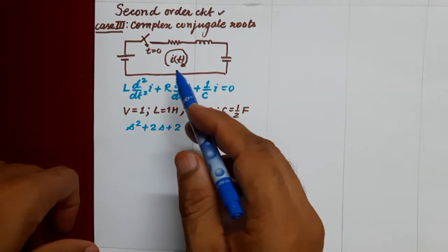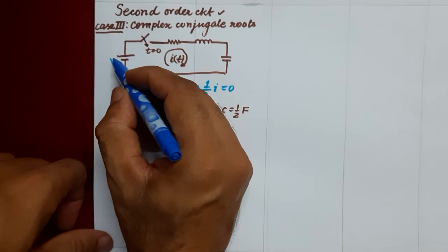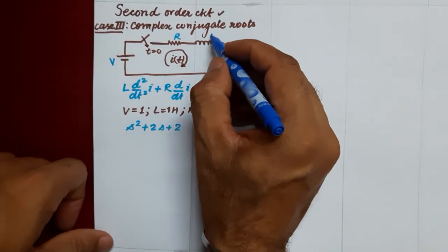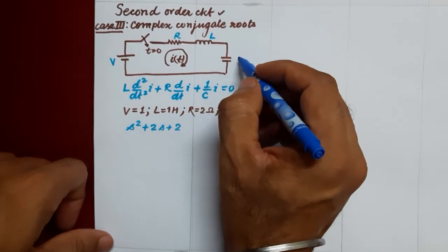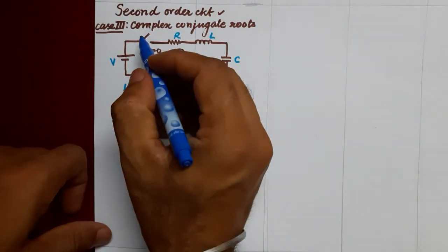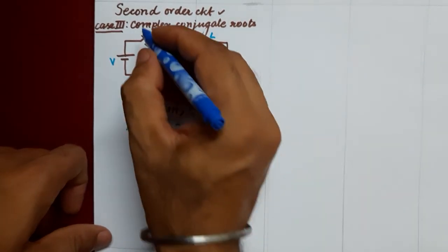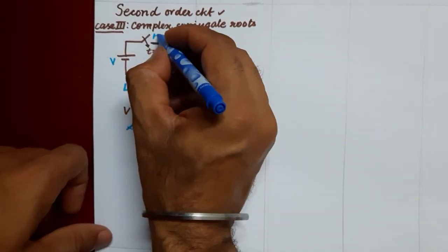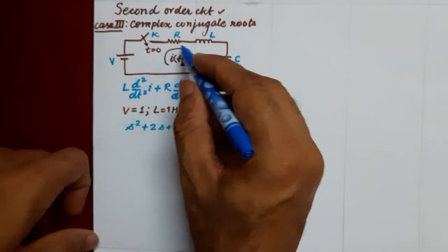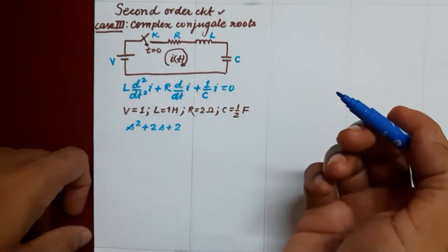This is our RLC circuit where a voltage source V is taken, a resistance R, inductor L, and capacitance C is there. This switch is closing at t equal to 0 and is named as K as usual. Current we assume clockwise and that is i(t).